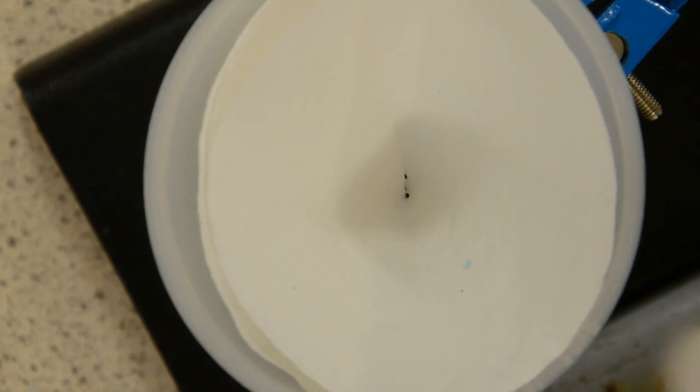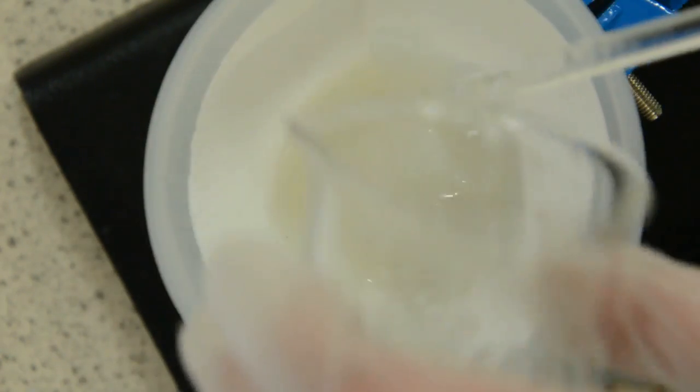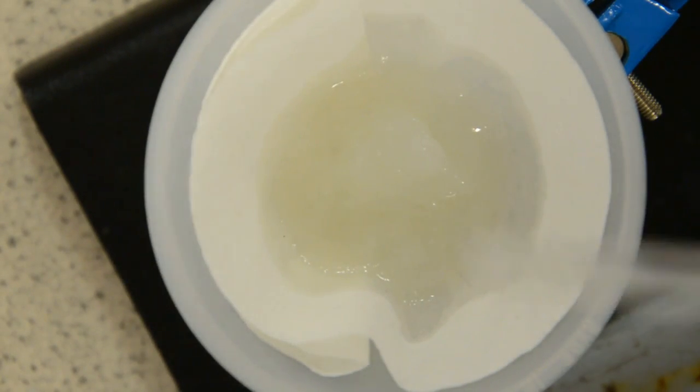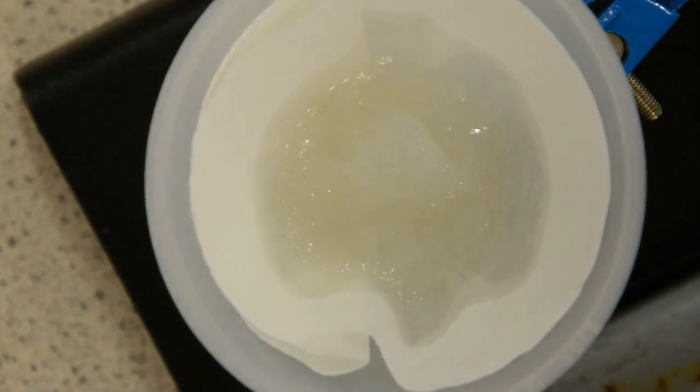The last thing we need to do is filter off the soap that we've precipitated out using the sodium chloride. So I've just set up a standard filter funnel and filter paper arrangement. I'm going to scrape the mixture into it and wait until the filtrate has finished dripping through.